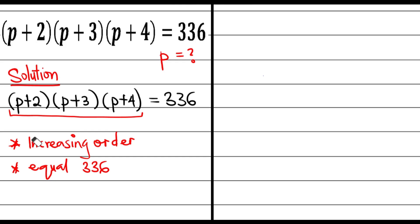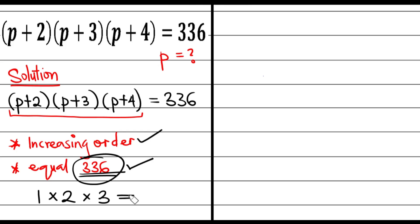Having known all that, my responsibility is to find those three numbers that will be in an increasing order consecutively, and at the same time, if I multiply them all together, must be able to give me 336. For instance, if I say 1 multiply by 2 then multiply by 3, of course this is in increasing order and it is also consecutive, but it's not going to give me what I want, 336, because this is going to give me 6.